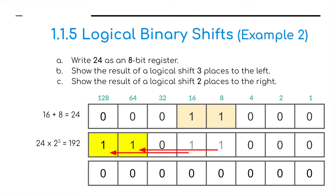Going back to the register containing 24 and shifting two places to the right, we're basically dividing. So 24 divided by 2 squared — two shifts — equals 6. That's 24 divided by 2 is 12, and divided by 2 again is 6. That's how we multiply and divide using logical binary shifts.